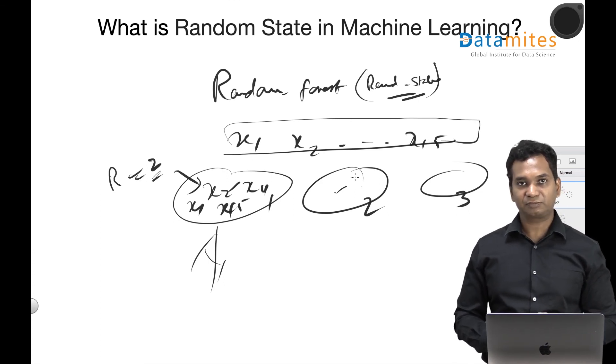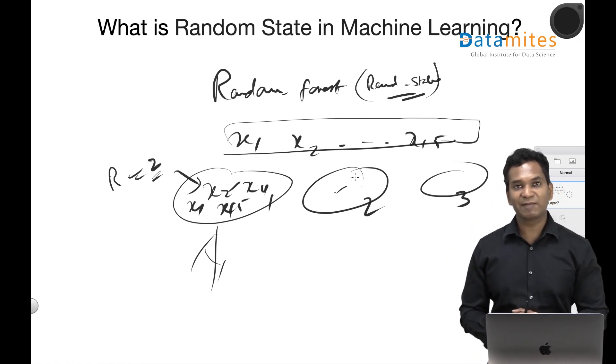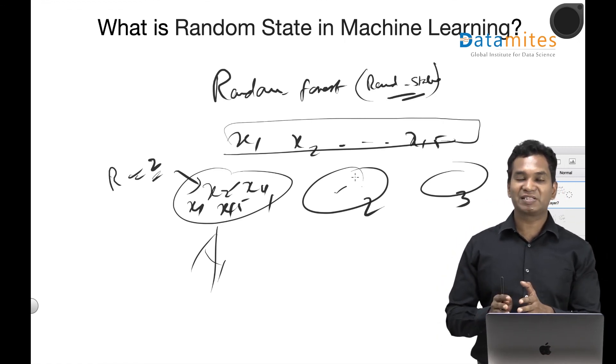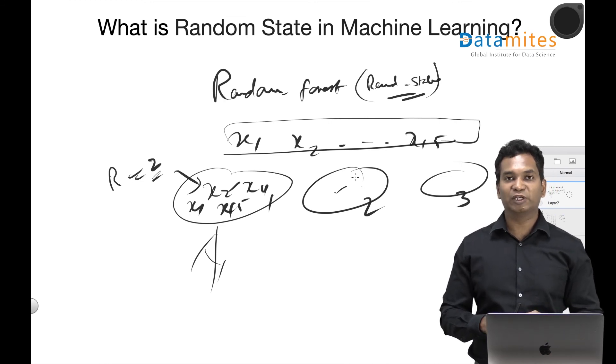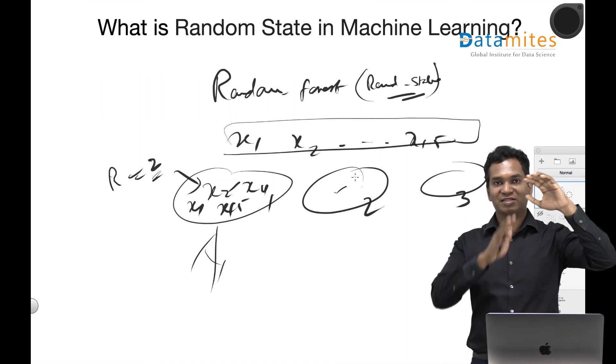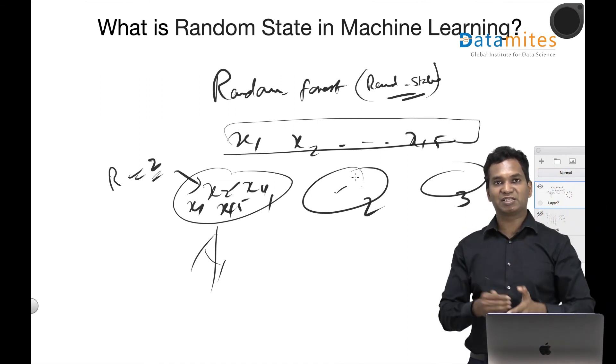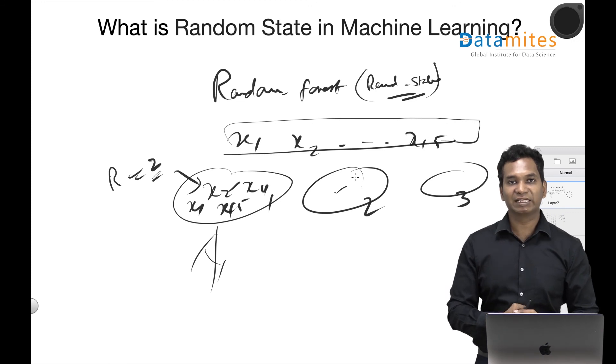To summarize, random state means separate things in different contexts. In terms of splitting your data, random state is just giving a state where you have certain records in training and certain records in testing. In the case of algorithms wherever there is randomness, the random state just defines a particular state.